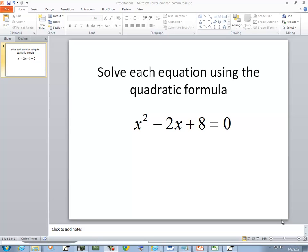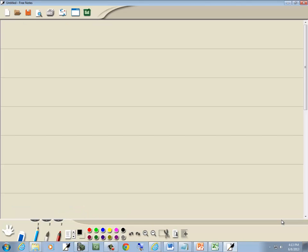Let's solve this equation using the quadratic formula. We've got x squared minus 2x plus 8 equals 0. In order to use the quadratic formula, I have to have 0 on one side, and we do, so that's good.